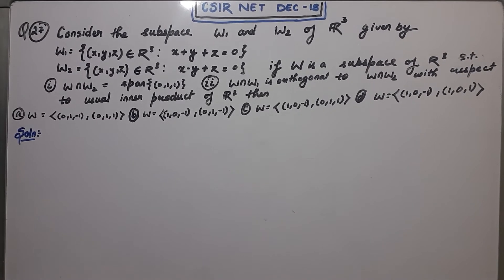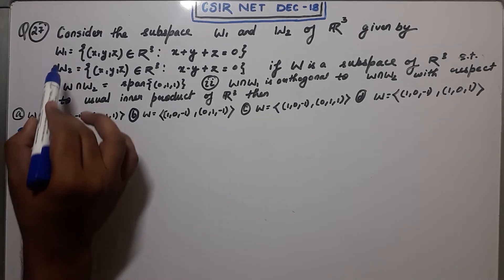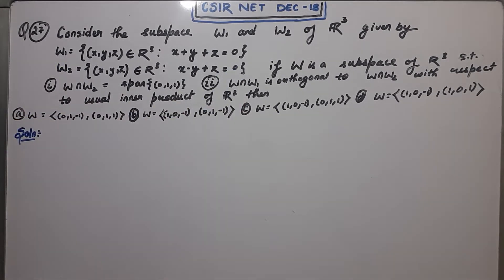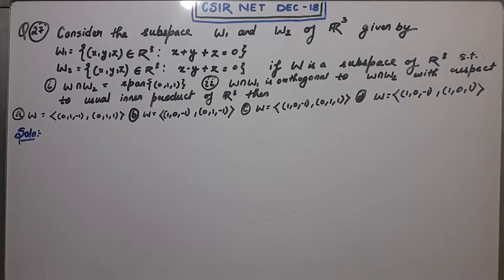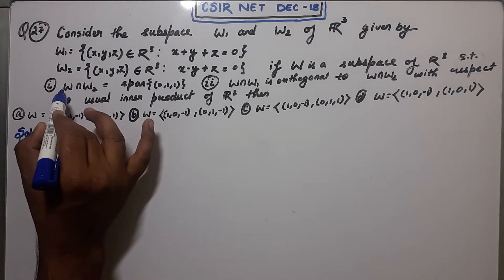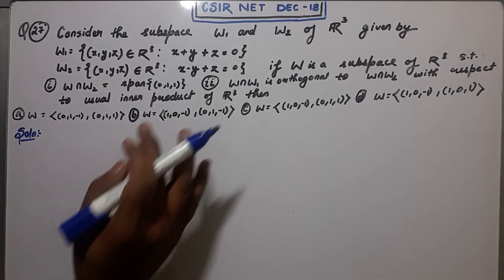Welcome guys, this is the 27th question of NET December 2018 and it's a question from Part B. Let us read the question: consider the subspaces W1 and W2 of R-cube. We have two subspaces W1 and W2 given, and they are saying that W is a subspace of R-cube such that W intersection W2 is basically the span of (0,1,1).